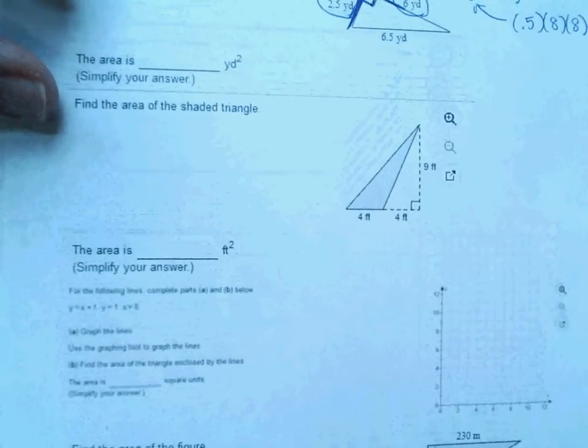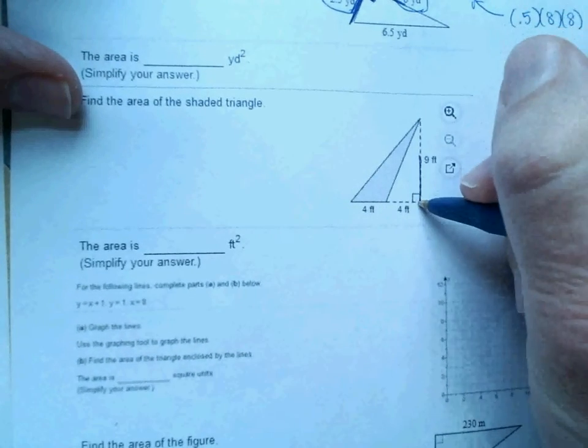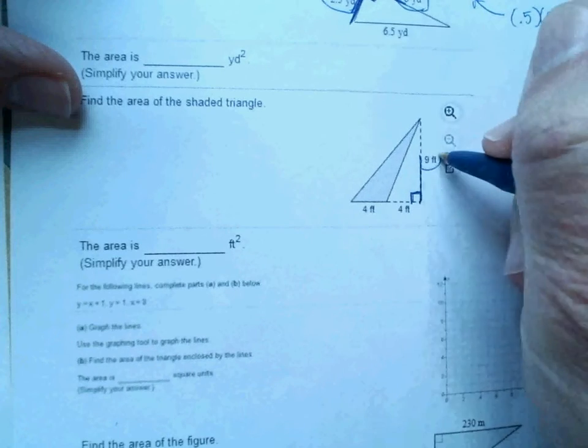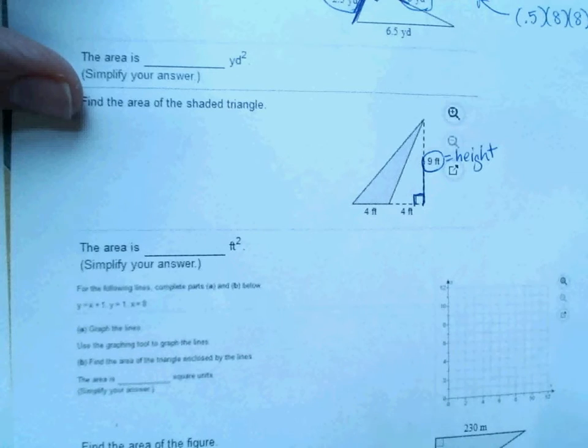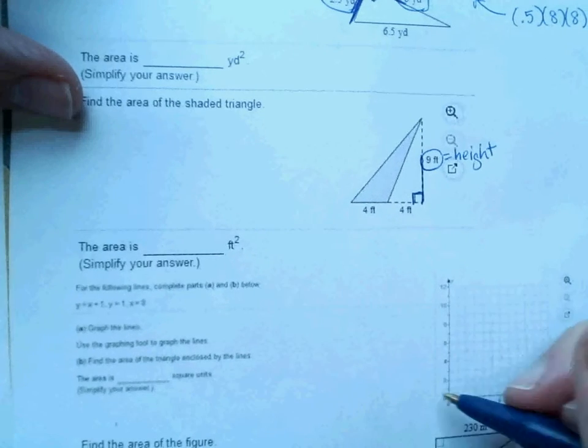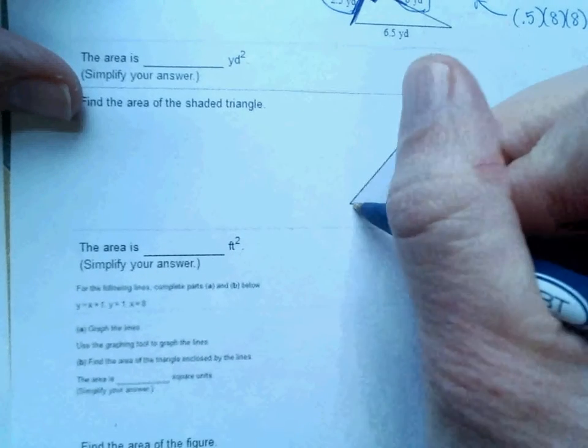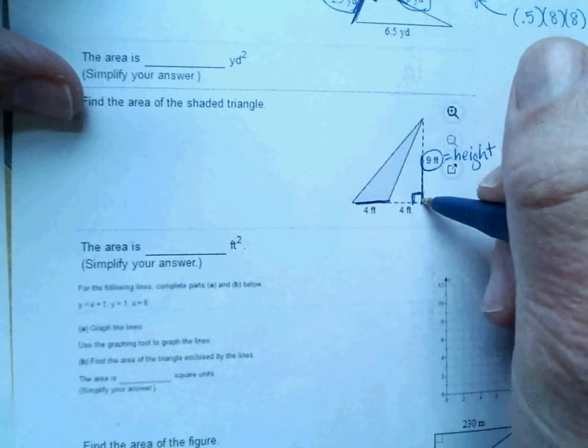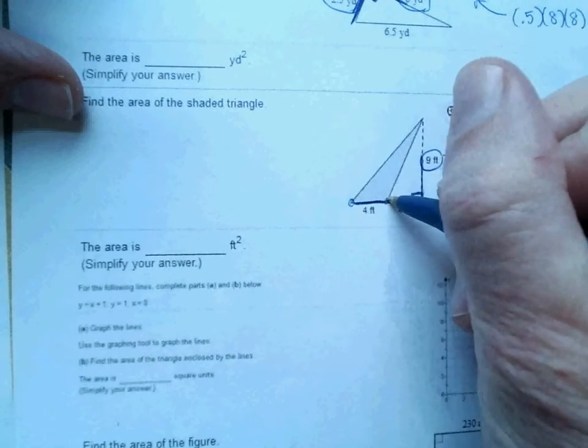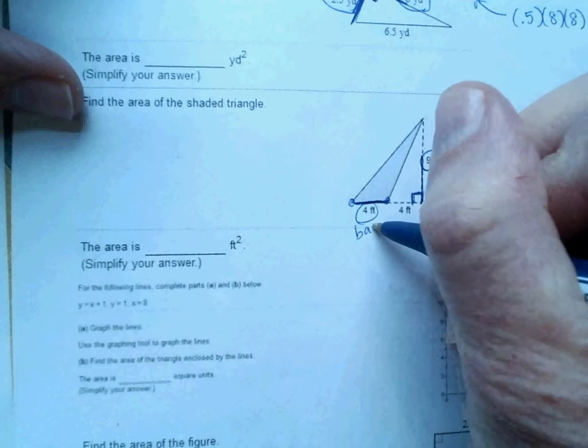This one's going to be the same way. This is an obtuse triangle. So if I look here, this number right here is your height. And I need a base with this one, and it always sits on your base. Remember, you're actually looking at the triangle. So this 9 right here for a height would actually sit from here to here. This one would be your base.